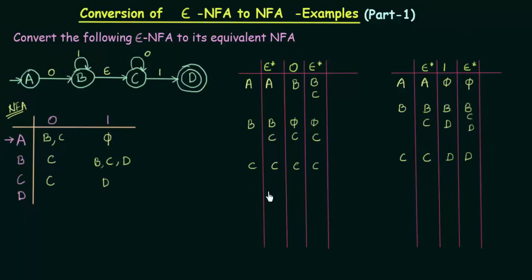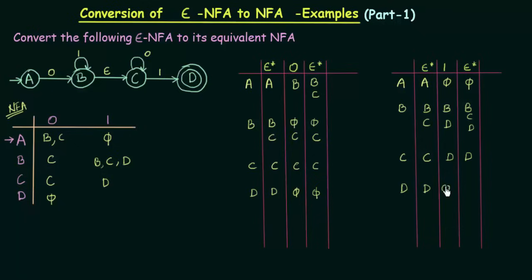Now state D: D's Epsilon closure is only D. D on input 0 doesn't go anywhere, so it is phi. D on input 1 also goes nowhere, so that is also phi. So now we have the complete transition table for our NFA.